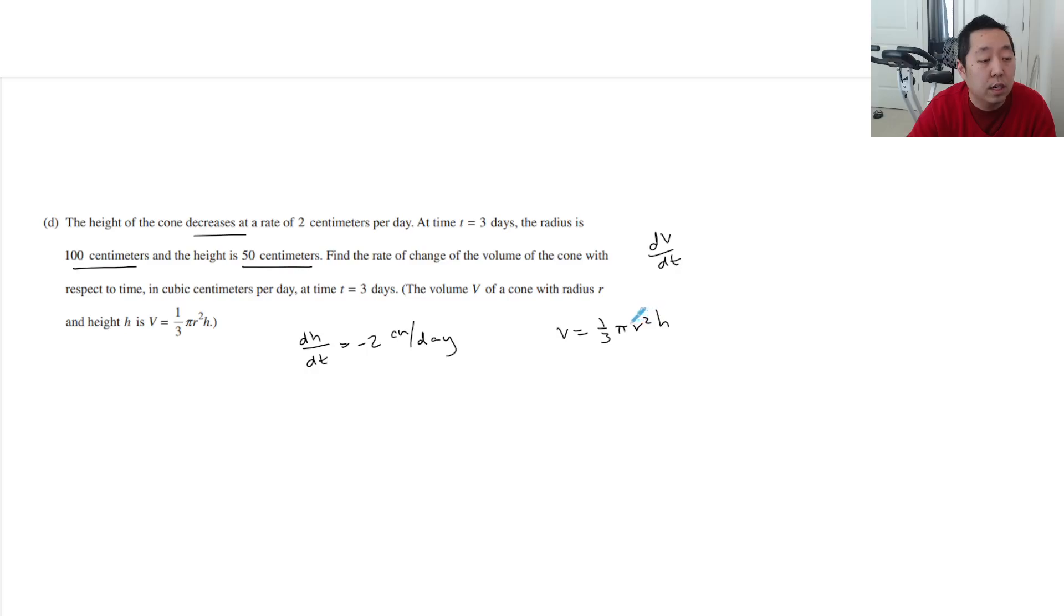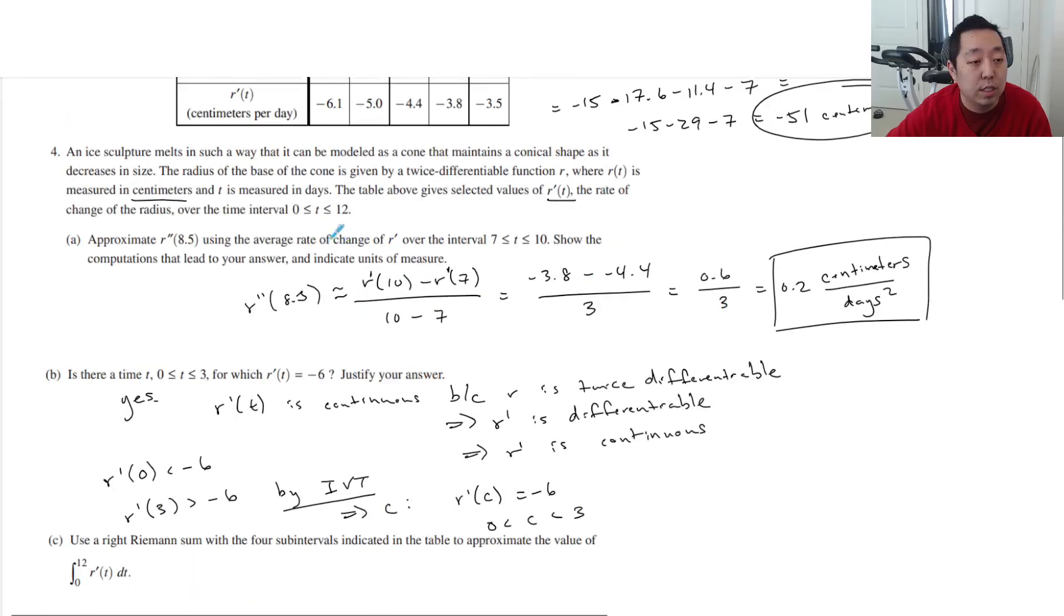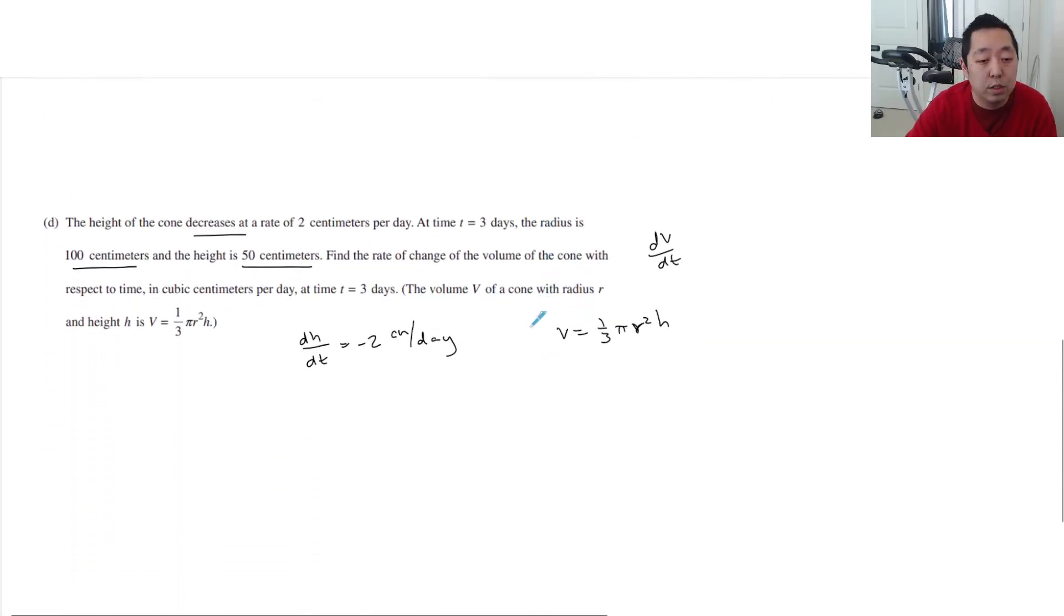So here you actually know dr/dt because they're giving you in the table. So you just need to take the derivative of this straight up as it is. So you get dV/dt = (1/3)π, and I got to do product rule for r² and h. So it's gonna be r²(dh/dt) plus 2r(dr/dt) times h. So I did product rule there.